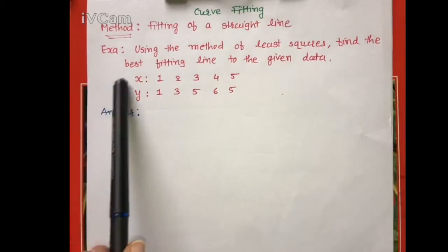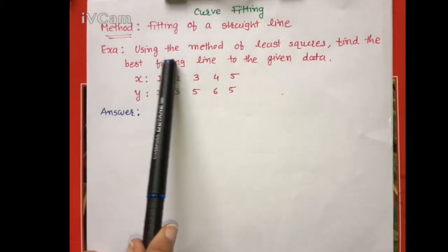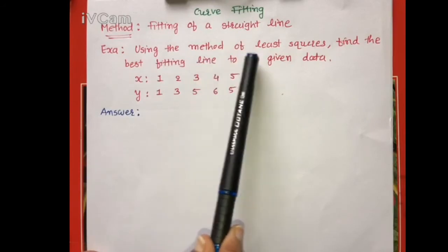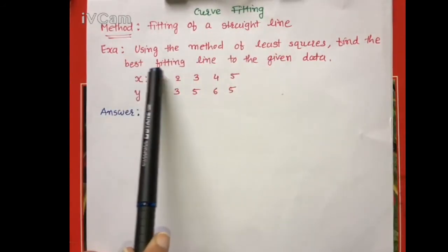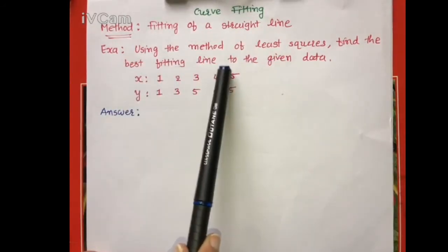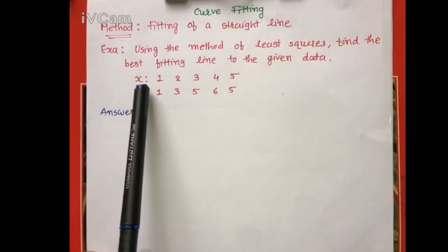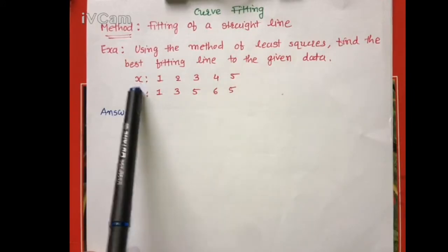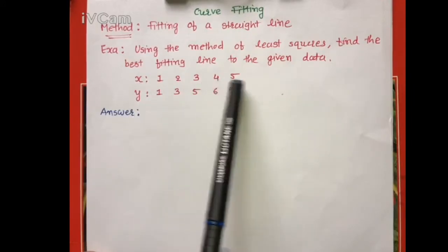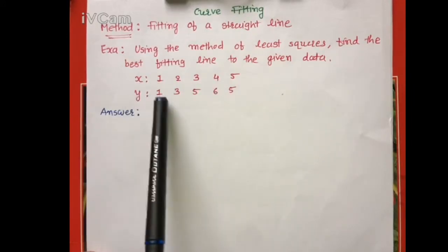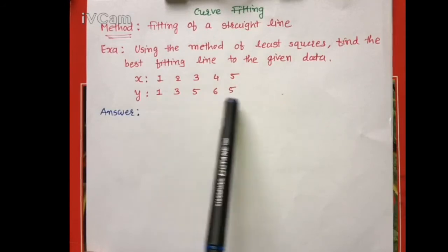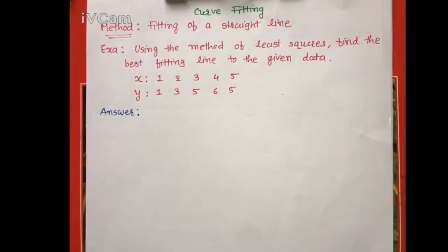The example is: using the method of least squares, find the best fitting line to the given data. The x values are given as 1, 2, 3, 4, 5 and the y values are given as 1, 3, 5, 6, 5. Here, which equation to be fit to the given data is not specified.